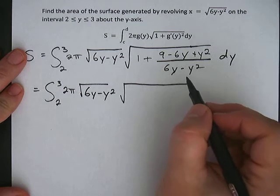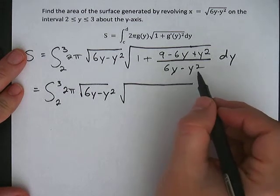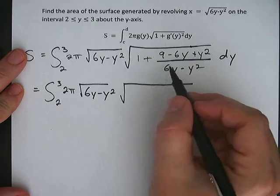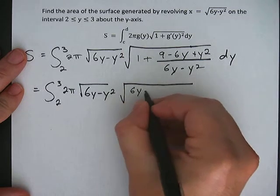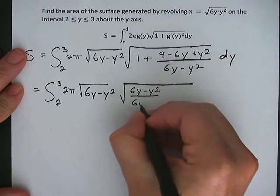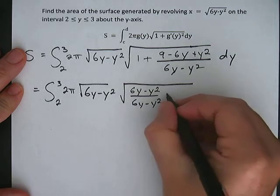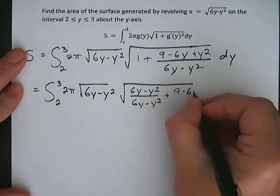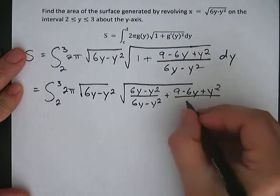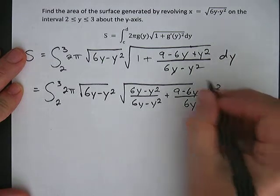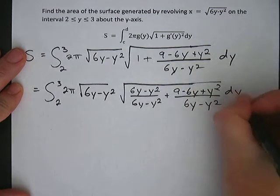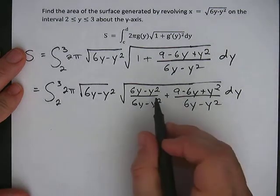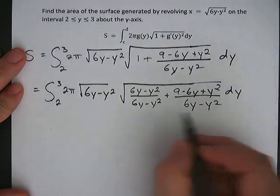Now we're going to combine this 1 with this fraction, which means we need a common denominator, which is going to be 6y minus y squared. So 1 will turn into 6y minus y squared over 6y minus y squared plus this fraction remains the same.